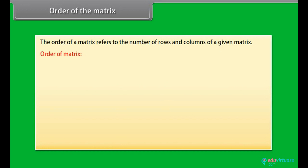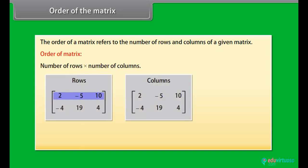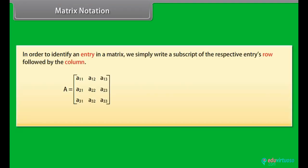By convention, the order of a matrix is given by number of rows by number of columns. Here we can see two pictures of the same matrix with the rows and columns highlighted. The order of this matrix is 2 by 3, that is 2 rows by 3 columns.